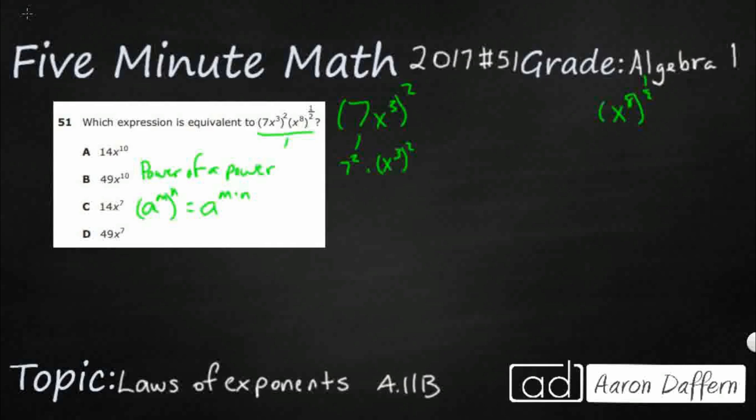So, 7 squared, that's pretty easy. That's 49. And then this x cubed, and then take that to the second power, that's going to be the same as this power of a power right here. So, this is going to be x to the 3 times 2. You're going to take the cubed and the squared, so this whole thing is 49 x to the sixth. We've got that one down.